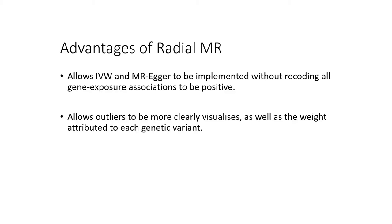Identifying outliers is particularly valuable in summary MR, where differences in effect estimates across the range of genetic variants used is indicative of violations of the underlying MR assumptions. Identifying these differences, or heterogeneity, can greatly improve our interpretation of the results, as well as inform subsequent follow-up of specific genetic variants.